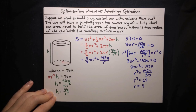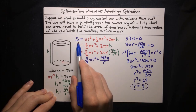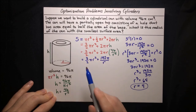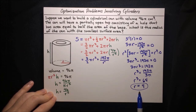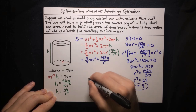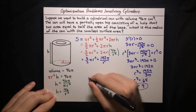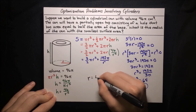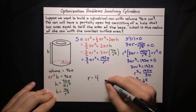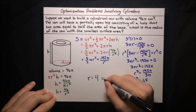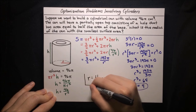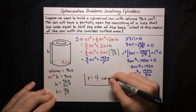You can verify this is a minimum by checking the second derivative — it comes out positive. Our final conclusion is that the radius of the can with the smallest surface area is r equals 4. The units of length are centimeters, so r equals 4 centimeters.